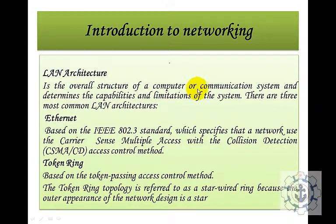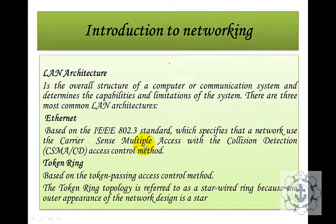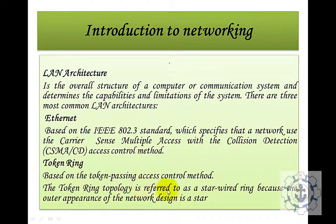LAN architecture is the overall structure of a computer or communication system, determining the capabilities and limitations of the system. The three most common LAN architectures are: Ethernet, based on the IEEE 802.3 standard, which specifies that a network uses CSMA/CD — Carrier Sense Multiple Access with Collision Detection — as its access control method; and Token Ring, whose topology is referred to as star-wired ring because the outer appearance of the network design is a star.